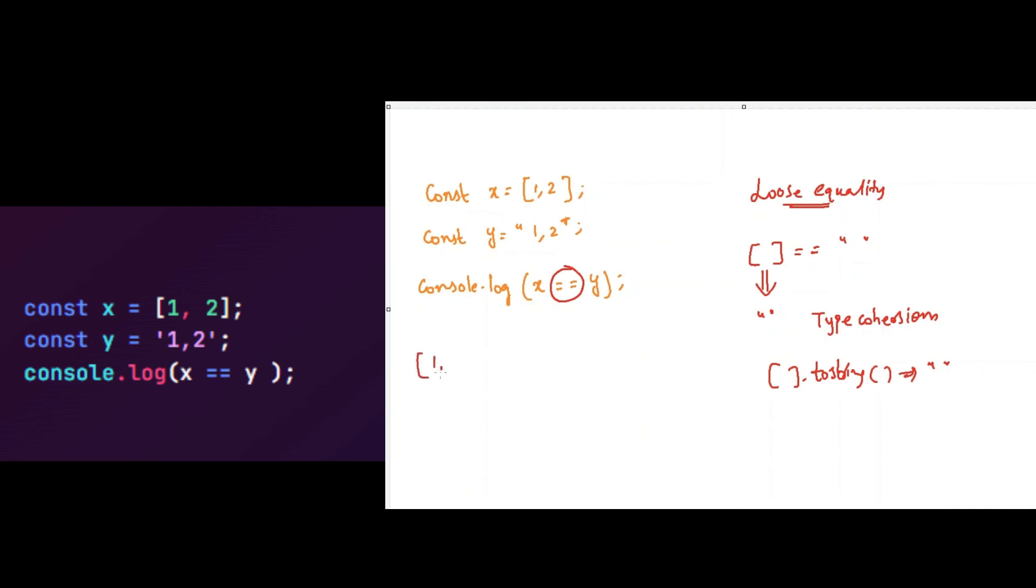As we see here, this is converted into a string, so this will be internally converted into string one comma two by the type coercion concept. So our expression will become string one comma two double equal to string one comma two. As both are equal, it will return true to us.